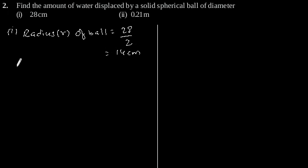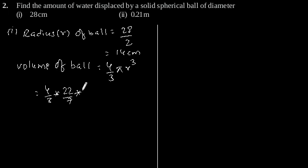Using the formula of volume of spherical ball is equal to 4 by 3 pi r to the power 3. Putting the value of r, 4 by 3 into 22 by 7, r is 14. So 14 to the power 3.